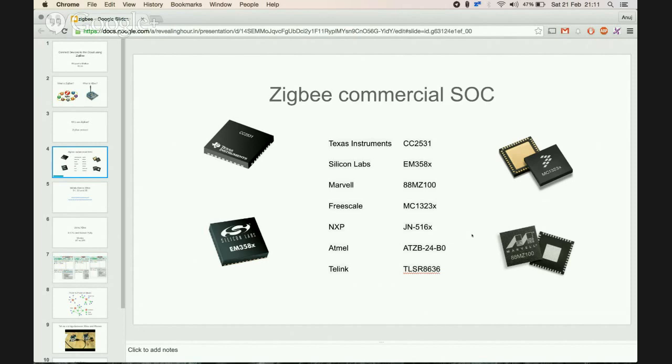Let's look at some of the commercially available system-on-chip ZigBee ICs: Texas Instruments, Silicon Labs, Marvell, Freescale, NXP, Atmel, and T-Link. These are different ICs that you can get that have ZigBee added on to them.